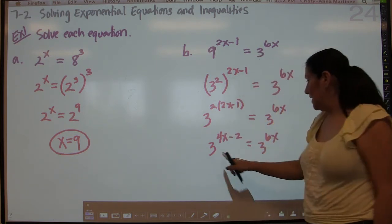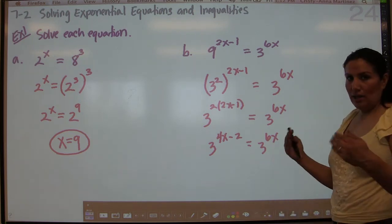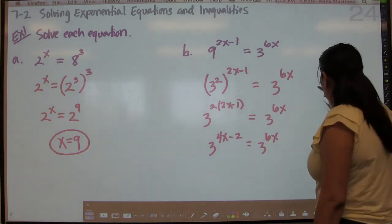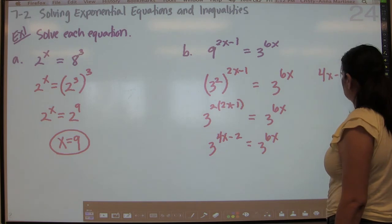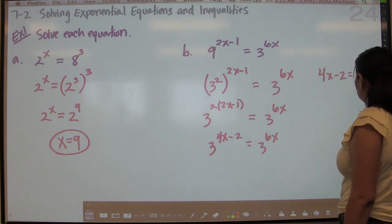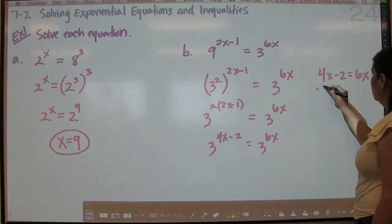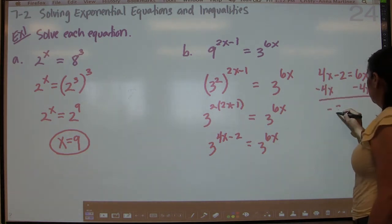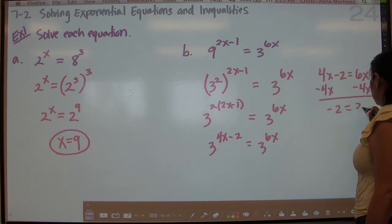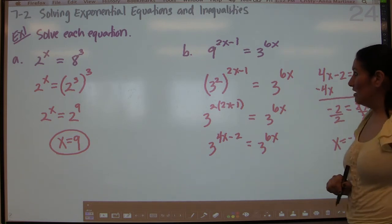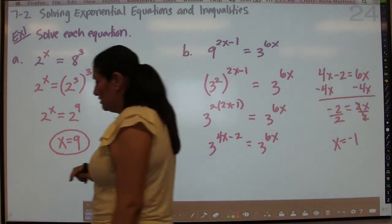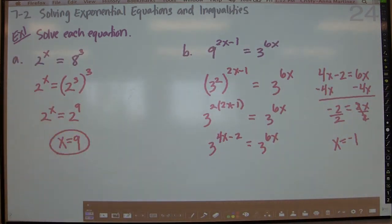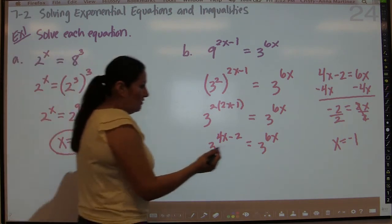And so now that we have the same base, we can equate the exponents. So we have that 4x minus 2 has to equal 6x in order for these two to be equivalent. We subtract 4x from both sides, so you get negative 2 equals 2x, divide by 2. And it turns out that x equals negative 1. If x equals negative 1, then the two sides of this equation will be equivalent.